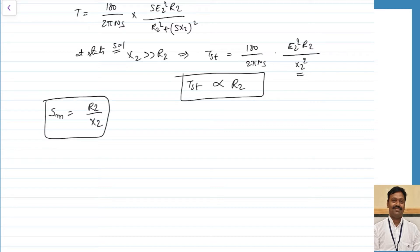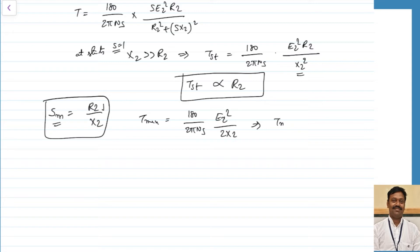If the ratio R2/X2 is more, the slip corresponding to maximum torque will be more, meaning maximum torque occurs at a larger slip. If R2 is less, the slip corresponding to maximum torque shifts towards synchronous speed. The maximum value of torque equals (180/2πNs) × E2²/2X2, so maximum torque is inversely proportional to reactance — if reactance is more, maximum torque will be less.